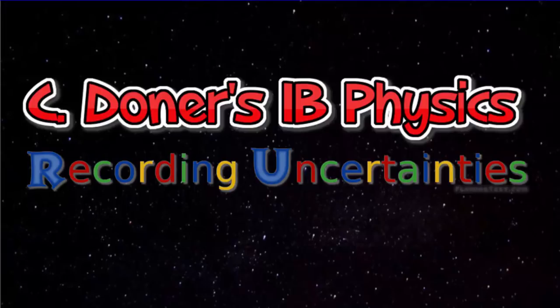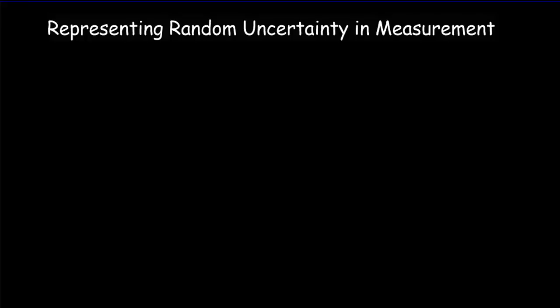Let's take a look at how we record uncertainties in our experimental work. In the previous videos we talked about uncertain digits and significant figures. We talked about random uncertainty and systematic error.